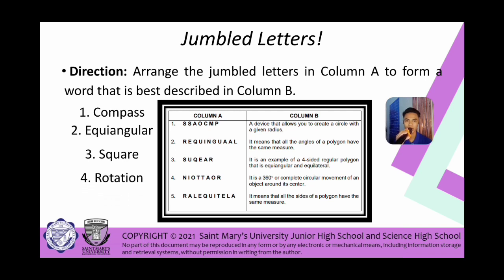Number four, the answer is rotation — a 360-degree or complete circular movement of an object around its center. And number five, we have equilateral, meaning all sides of a polygon have the same measure. Did you get five out of five on this preparatory activity? Very good if you got it perfectly.